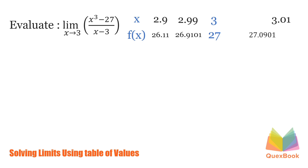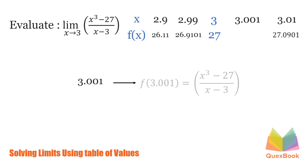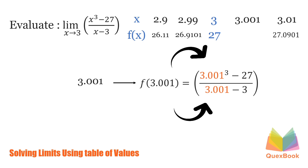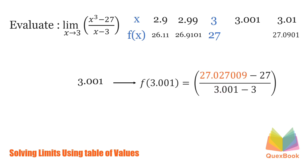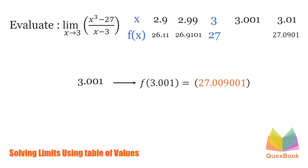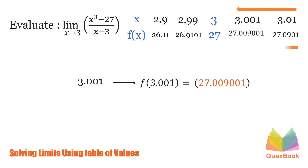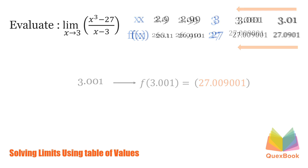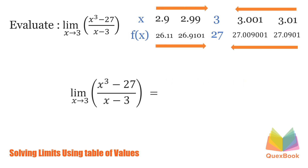Now let's try to plug in 3.001. We'll have 3.001 cubed minus 27 over 3.001 minus 3. Simplifying: 3.001 cubed is 27.027009001, minus 27 is 0.027009001. 3.001 minus 3 is 0.001. Dividing, we'll have 27.009001. So it's clear that as our x approaches 3, the limit of our function gets closer and closer to 27. So the answer for this problem is 27.